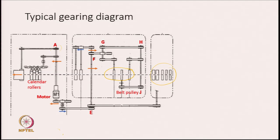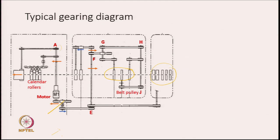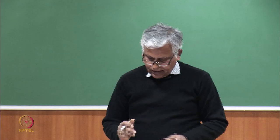This is the shaft on which these 2 pulleys are connected. But this belt is going below this pulley. If you look at the diagram, this belt is driving both pulleys, but it is not going over the pulley — it is going under the pulley. And as a result, the directional rotation changes. So if it is rotating clockwise, this will rotate in the anticlockwise direction. That is how the blue arrow indicates a change in the direction of rotation.